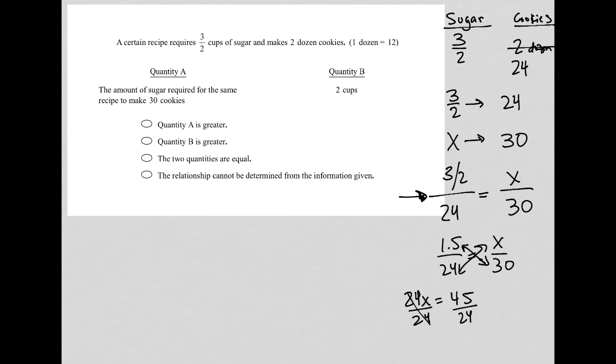You can use the calculator provided for this test. 45 divided by 24 is 1.875, so quantity A is 1.875.